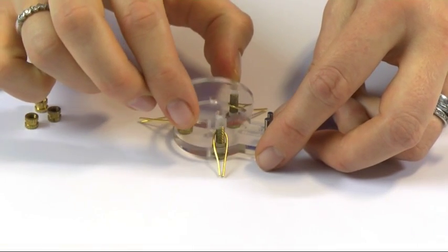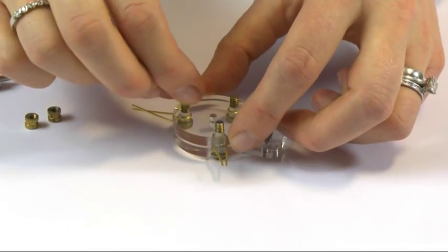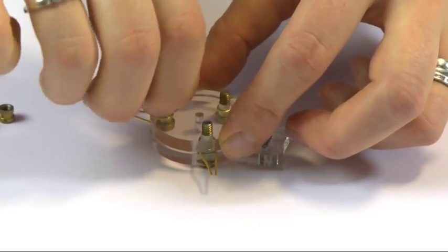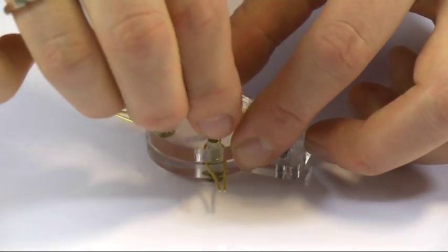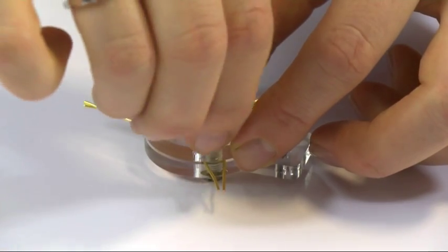Then you put your top section back on and put these little screws back together. They don't need to be tightened too much because the idea is you're creating a gap or a sandwich.